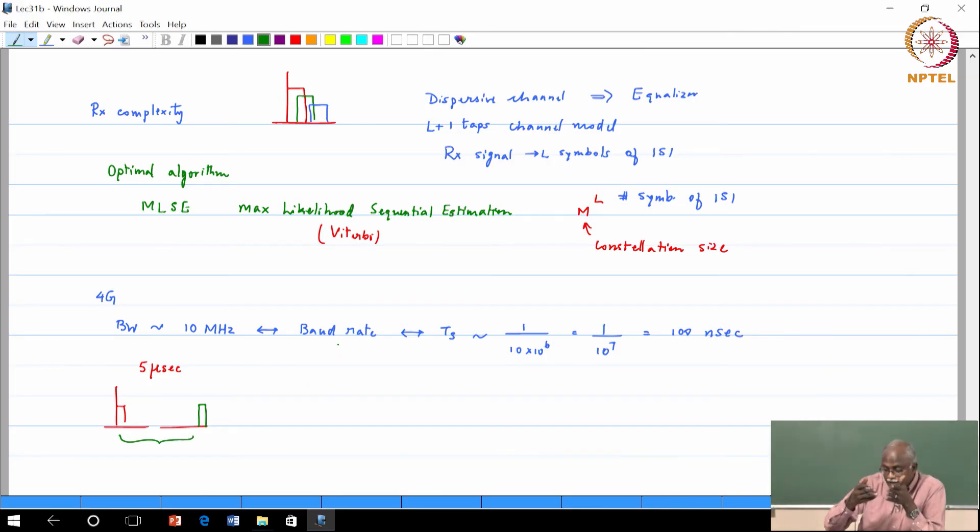Now in this period of time, how many symbols have gone by? I will have to take the symbol duration - the delay spread 5 microseconds divided by symbol duration. Symbol is 100 nanoseconds. So approximately 50 symbols have gone by.